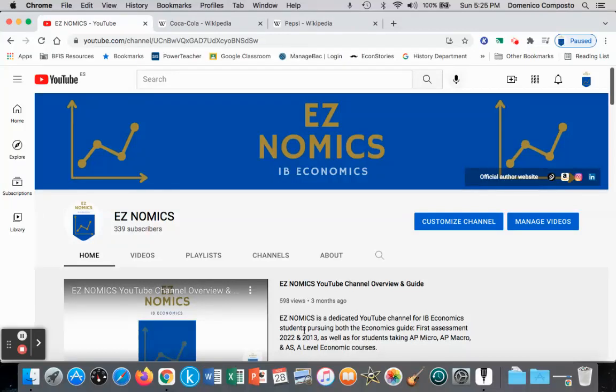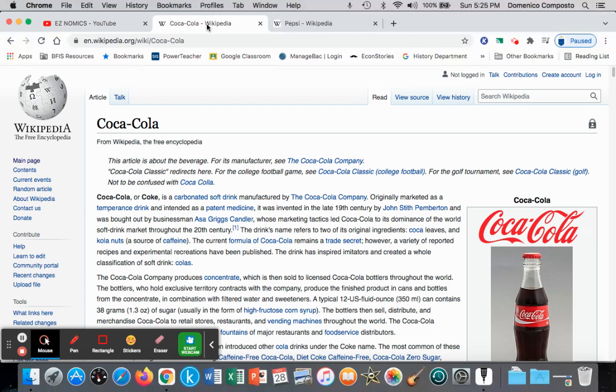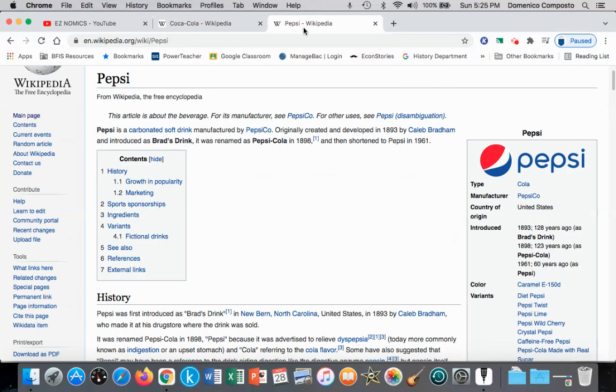Hello, this is Domenico with EZnomics, and we're going to do another PED calculation on an elastic demand curve. This is a continuation from a previous video, which will be linked at the end of this video. In that previous video, we were using Coca-Cola as the example and looking at a change in price and its impact on total revenue and what the PED value would be. We would expect Coca-Cola to have a very elastic demand curve due to the availability of so many substitutes like its competitor, Pepsi.